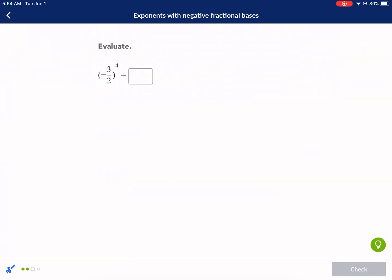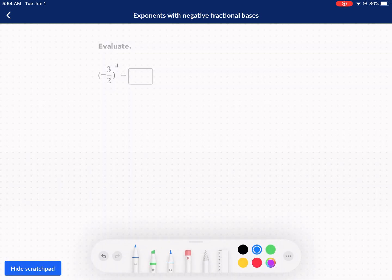Doing well here. We have negative 3 over 2 to the fourth power. We have a fourth power here. And because anytime you have a negative number and you raise it to an even power, it's going to be a positive number. So we know this is going to be positive. Just like when we squared it, it was positive.